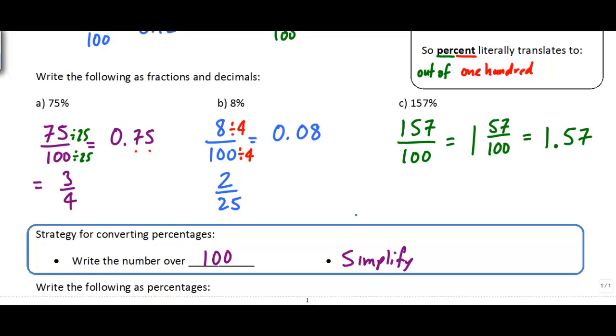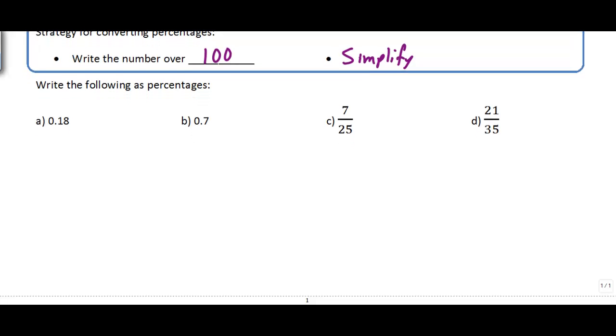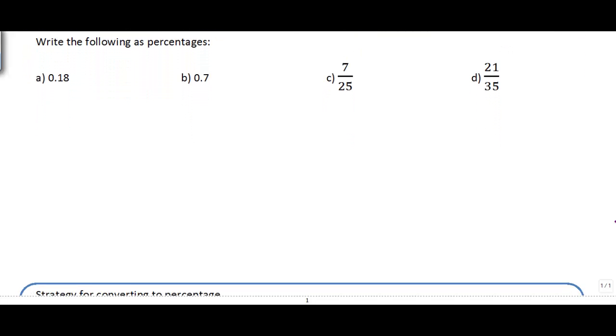Now when we have to go the other way around, if we have a decimal or a fraction and we have to convert it into a percentage, let's take a look. 0.18, we need to convert that into a percentage. We know that 0.18 is the same as 18 one-hundredths, and so 18 over 100 is just going to be 18%.